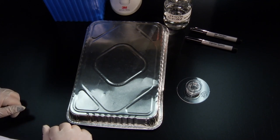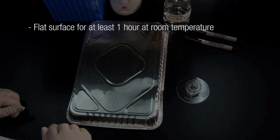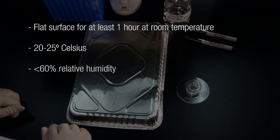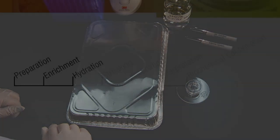Place the 3M PetriFilm Salmonella Express Plate on a flat surface for at least 1 hour at room temperature, 20 to 25 degrees Celsius and less than 60% relative humidity, protected from light to allow the gel to form. An aluminum foil tray is being used here.